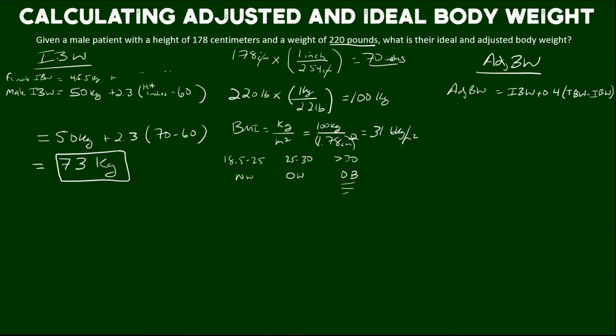So for this patient, the calculation of adjusted body weight would be the ideal plus 0.4 or 40% adjustment times 100 minus 100, which would be the total body weight minus the ideal body weight. And that gives us an adjusted body weight of 83.8 kilograms.